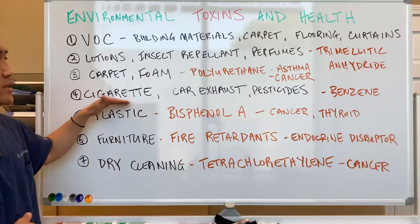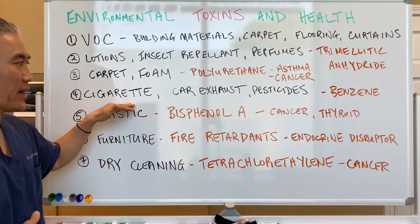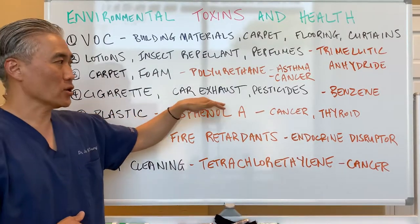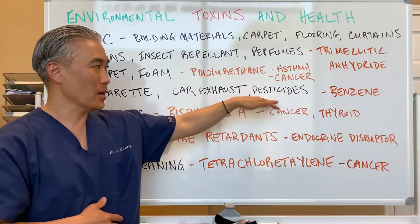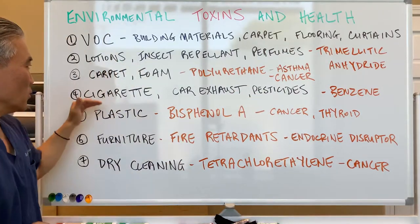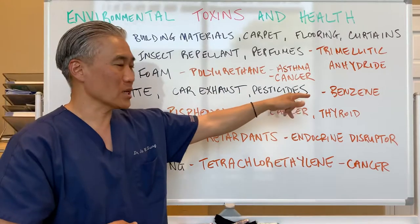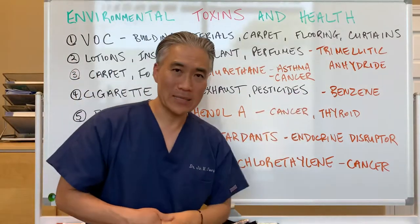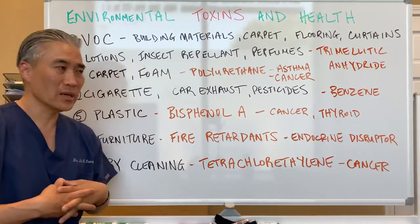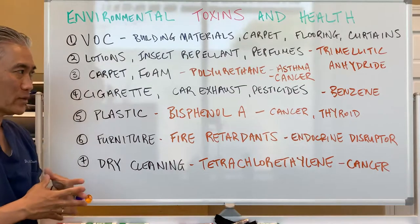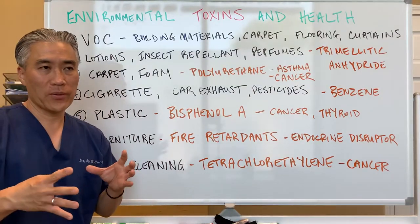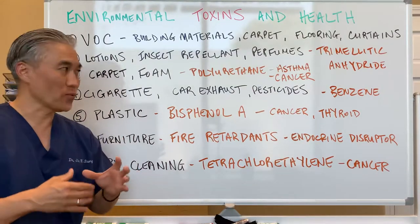Number four: cigarettes. We know the obvious impact of cigarettes. Car exhaust systems, pesticides. With the cigarettes and car exhausts, we're talking about benzene. Benzene will be an endocrine disruptor, and it can create a lot of issues with asthma and so forth.